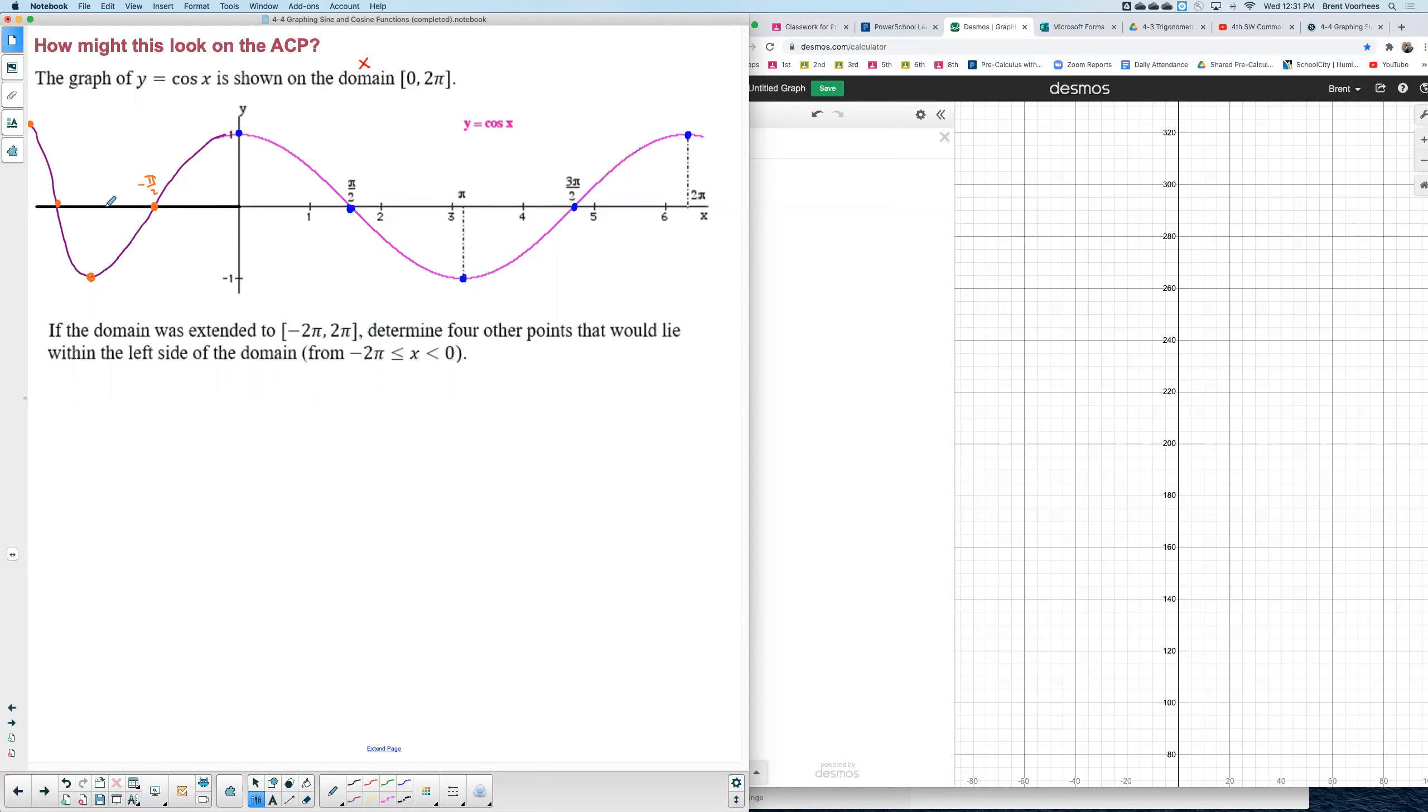So the location that this is pi over two, this one would be located at negative pi over two. If this were at pi, this would be at negative pi. If this were three pi over two, this next one would be negative three pi over two. And finally this last one's at two pi so this would be at negative two pi.